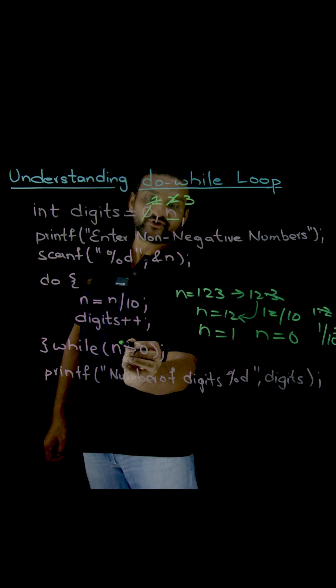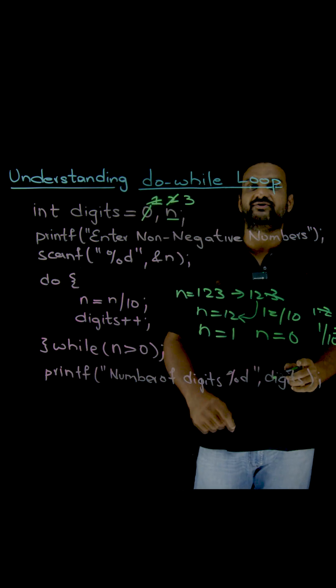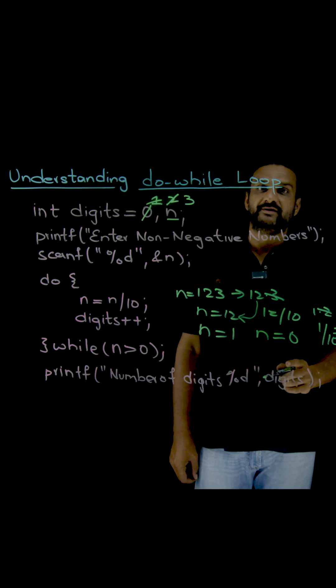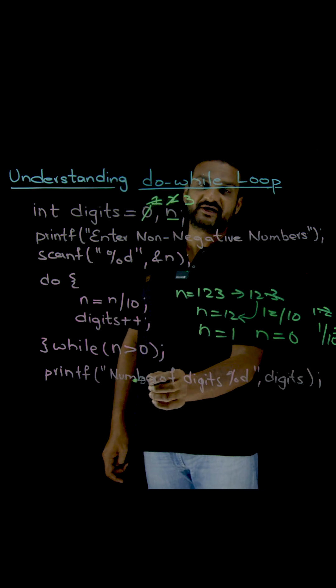Again we are going to compare the value of n greater than 0. Is it greater? No, it is equal to 0. So as it is equal to 0, we are going to come out of this loop and we are going to print this.